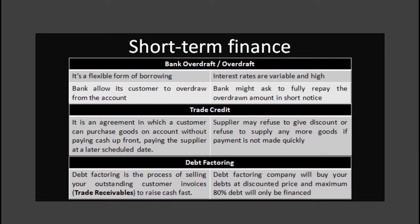Another way of using trade credit to provide short term finance is to delay payment to the supplier. For example, instead of negotiating to increase the credit period from 30 to 40 days, the customer simply takes longer to pay. However, there are limitations: any discount offered by the supplier for prompt or early payment will be lost, the supplier may refuse further deliveries until the outstanding payment is made, and if delayed payment occurs too often, the supplier may demand payment before delivery.